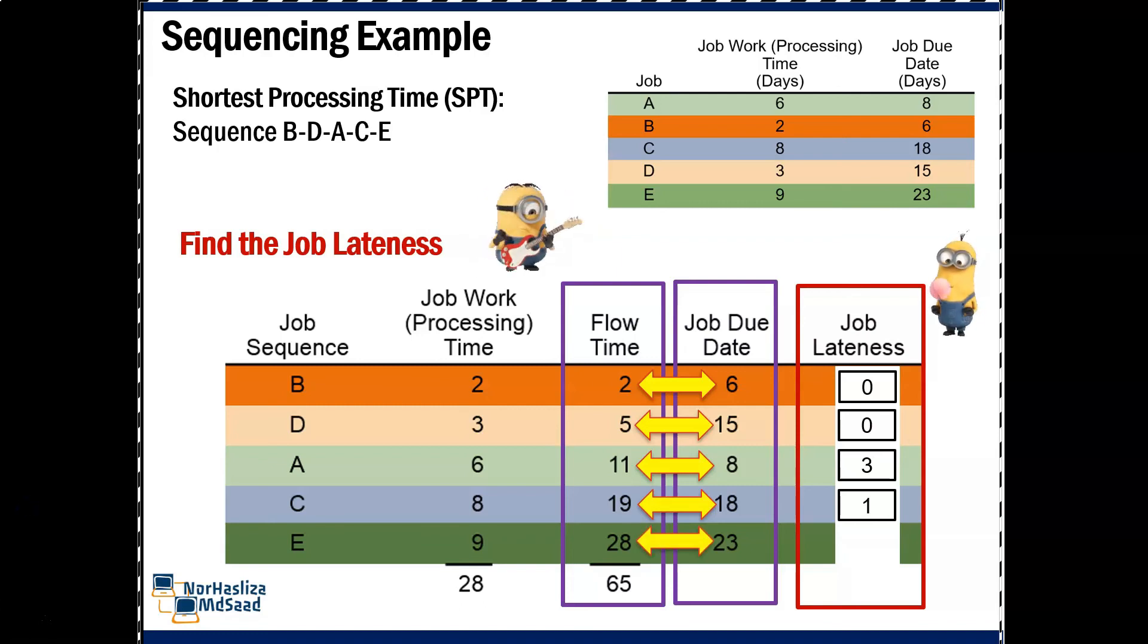For E, flow time is 28 and job due date is 23. Job lateness is 5. The total number of job lateness here is 9.